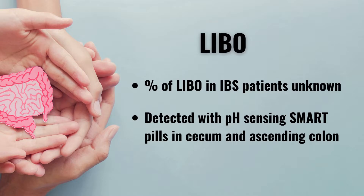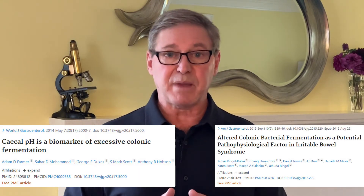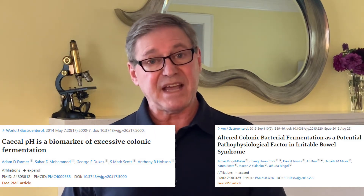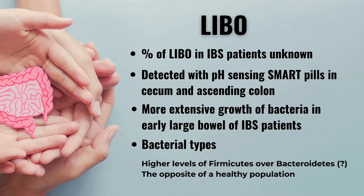A type of dysbiosis that is certainly underreported is something I refer to as LIBO, for large intestinal bacterial overgrowth. While the exact percentage of LIBO in IBS patients is unknown, it might be quite high. LIBO is detected with pH-sensing smart pills in the cecum and ascending colon as increased acid compared to healthy controls. The acid comes from increased bacterial growth, fermentation, and the production of short-chain fatty acids that lower the pH. IBS patients tend to have higher levels of Firmicutes over Bacteroidetes, which is the opposite of a healthy population.